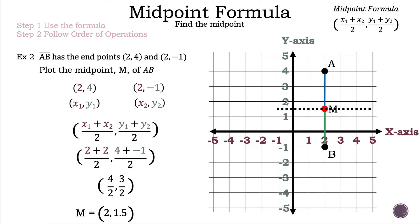Let's show why that is the case. We cut segment AB in half at point M. Counting from point B to point M: 1, 2, and a half — so 2.5 spaces. Counting from point M to point A: a half, 1, and 2 — also 2.5 spaces. So point M is in the right spot, and the midpoint of 2, 4 and 2, negative 1 is 2, 1.5.